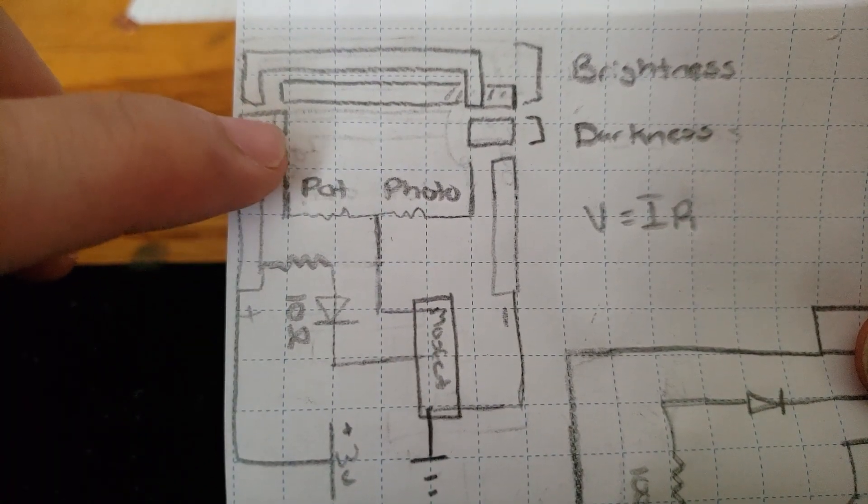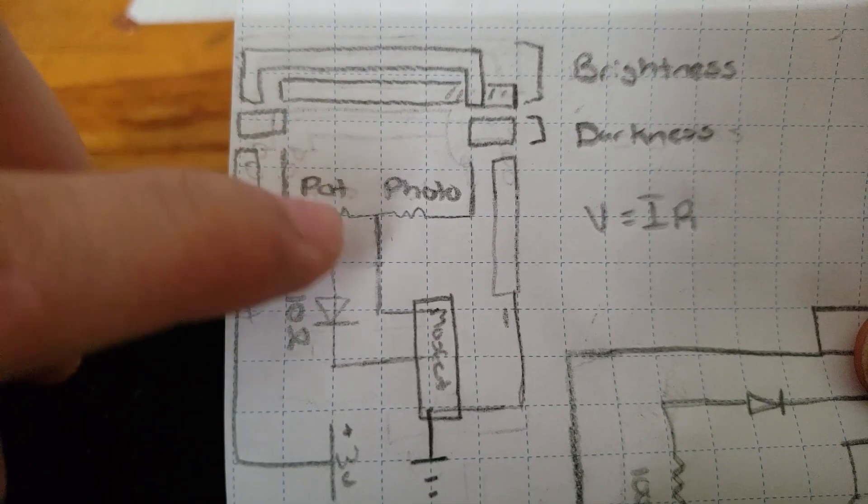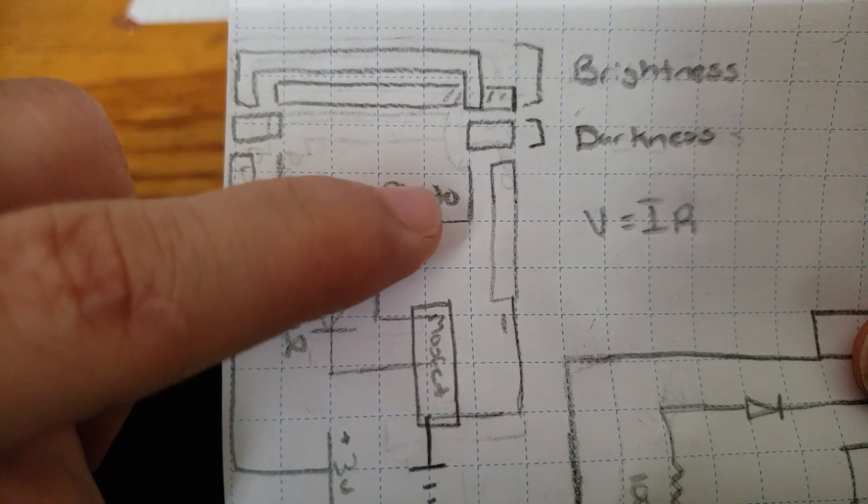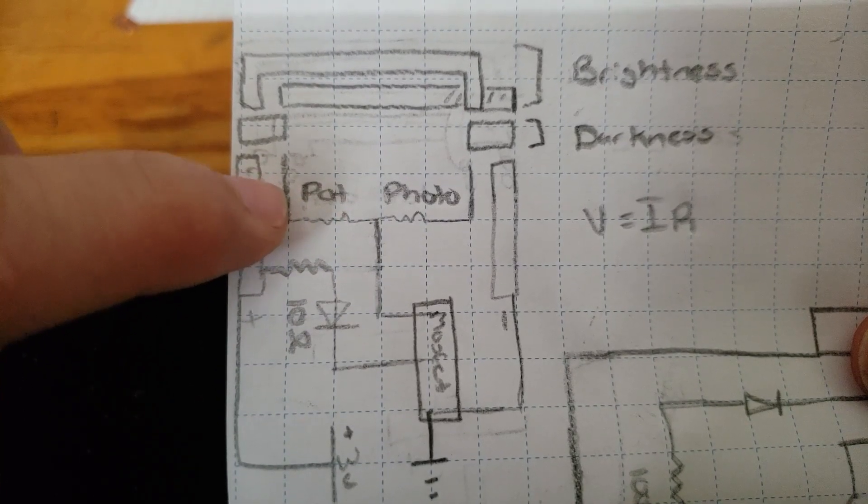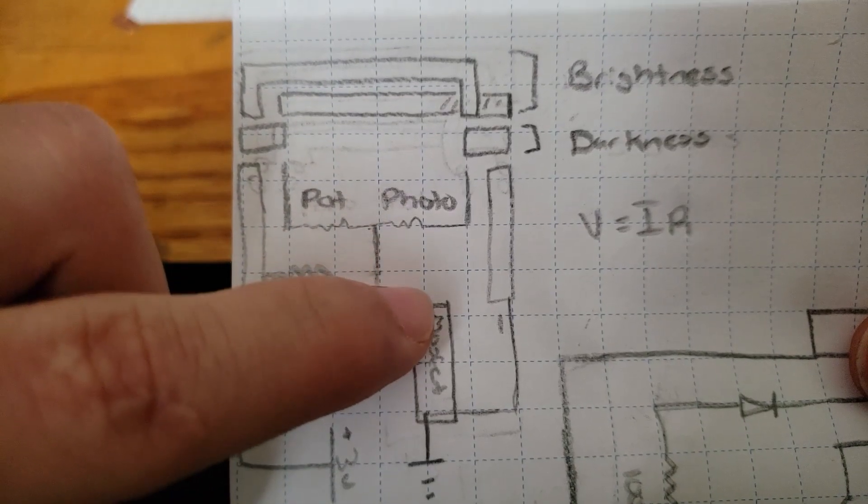If the positive is connected to the potentiometer, this means that when it's bright, the photoresistor will have a really low resistance. The potentiometer will have a really high resistance, causing a high voltage drop, resulting in a low voltage.